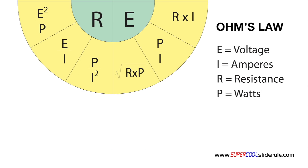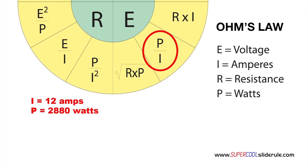If you have a super cool slide rule, get it out, turn it over to the back — this is the equation we are using. For this example, we will use 12 amps and watts of 2880.